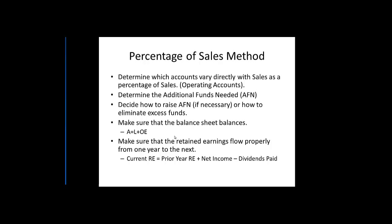The two key things to look for in a forecast are: first, that the balance sheet balances — assets equal liabilities plus owner's equity, so the right-hand side equals the left-hand side. And second, that retained earnings flow properly from one year to the next — the forecasted year's retained earnings should equal the prior year's retained earnings plus net income for the year minus dividends paid.